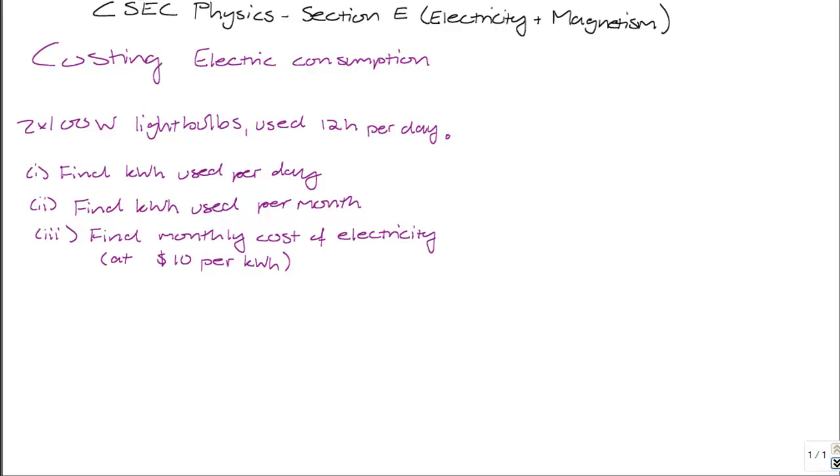So the question we're going to do today is on the screen already. It states that we have two 100-watt light bulbs used for 12 hours per day, and based on that information, we're asked to first estimate the kilowatt hours used per day, find the kilowatt hours used per month, and then find the monthly cost of electricity at $10 per kilowatt hour.